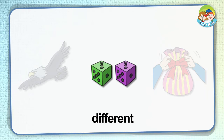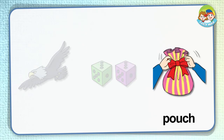Branch. The branches of a tree grow out from its trunk. In the picture, many branches grow out from the trunk and leaves are on the branches. Plant. This is a kind of plant. A plant is a living thing — it has a stem, leaves, and roots. Do you have a plant in your house? Do you know the plant's name?